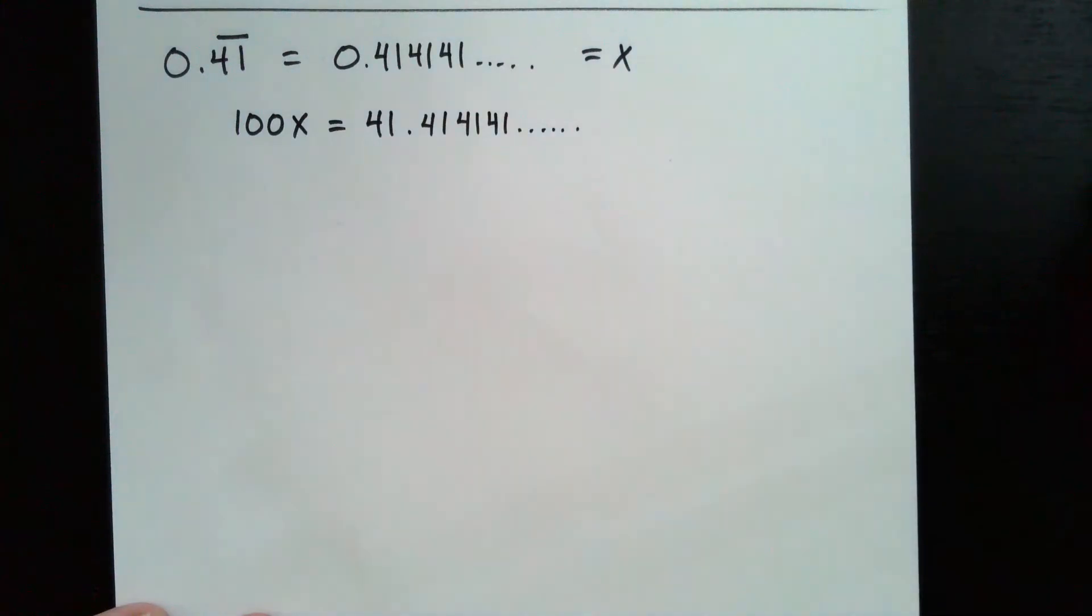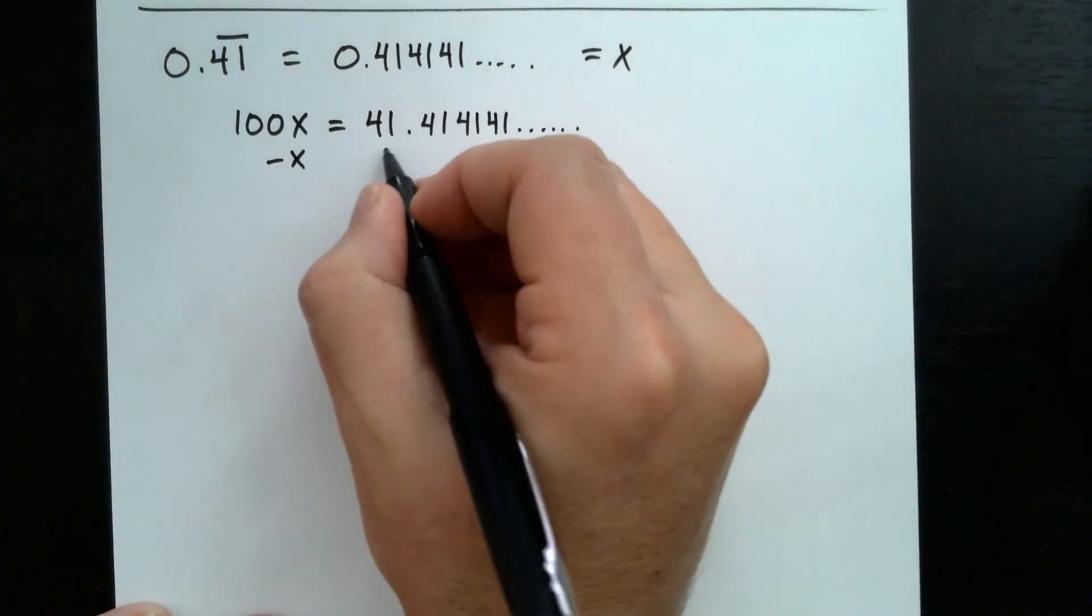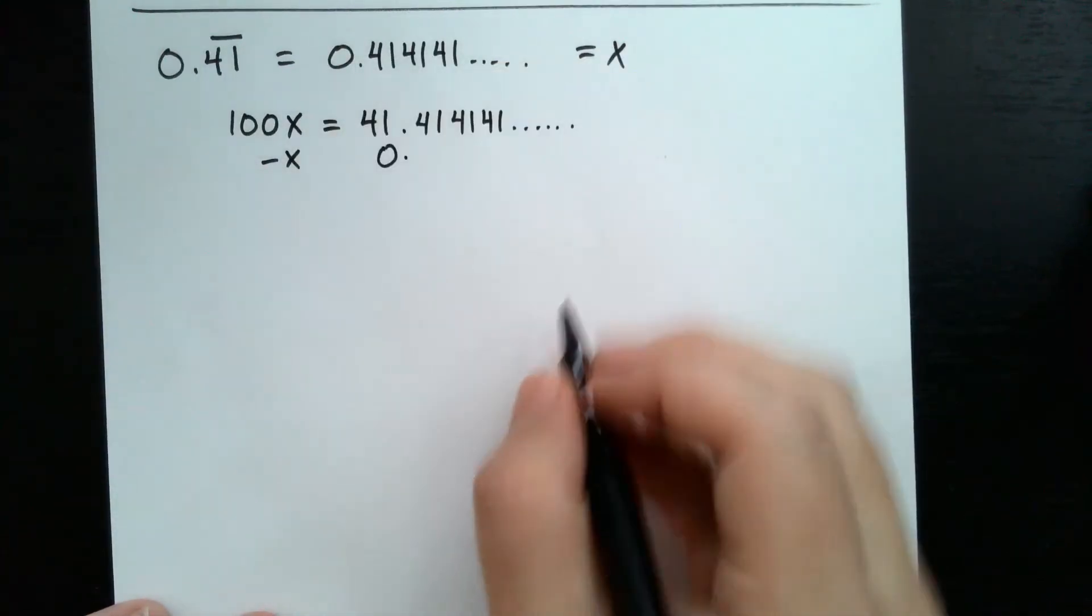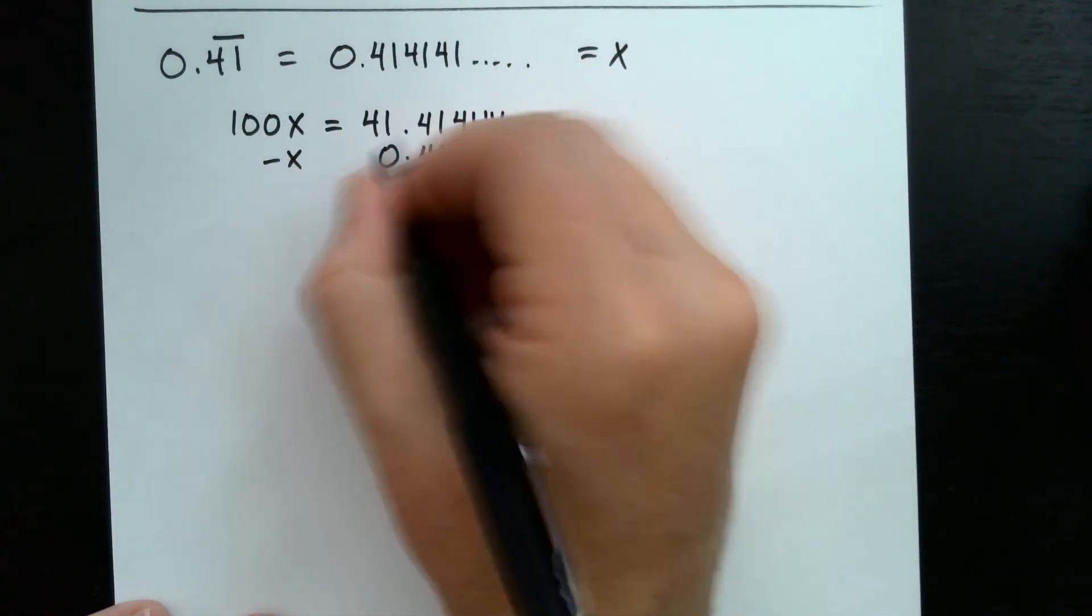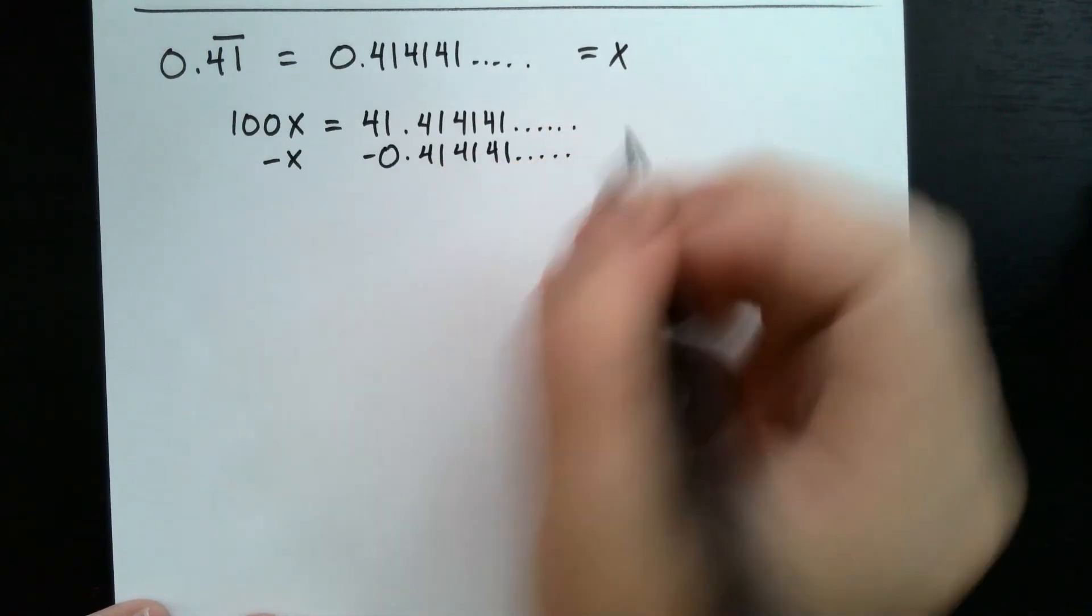Now I'm going to do the same thing I did last time. I'm going to subtract an x, which means over here on the right, I'm actually subtracting this. So subtracting 0.414141 repeating.